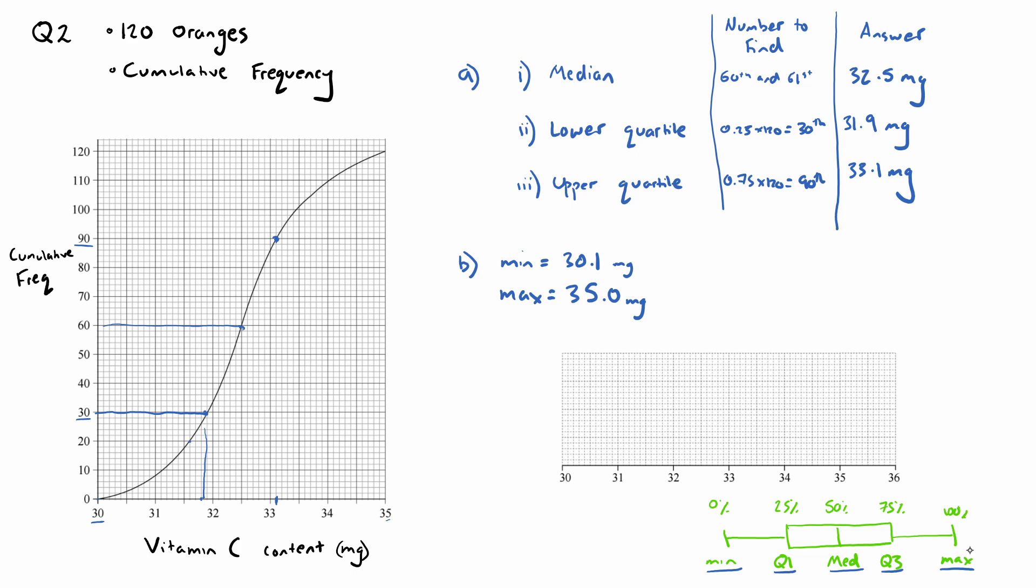Now we have these five pieces of information. Three of them we found out in Part A, so our median is 32.5. I'll just put a star next to all these five important pieces. So median here, lower quartile, upper quartile Q3, and then we are given in the question our min and max.